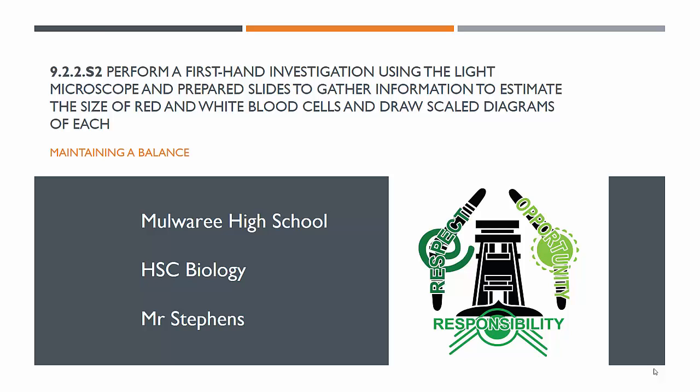Hello Year 12, welcome to another flip video. This is an interesting dot point. Today you are going to be performing an investigation, so there are some technical skills at play here. It's about using a light microscope to look at prepared slides of blood to estimate the size of a red and white blood cell, and then you're going to draw some diagrams of each of them.